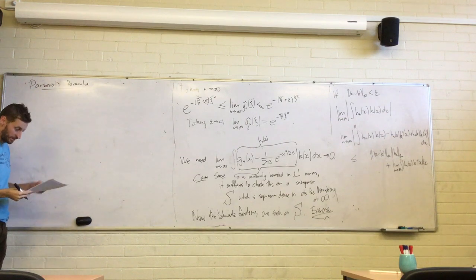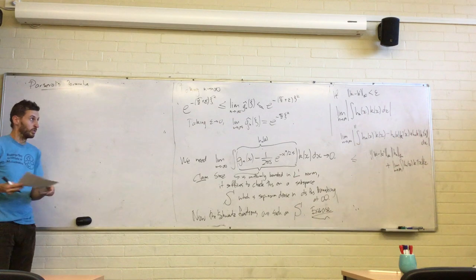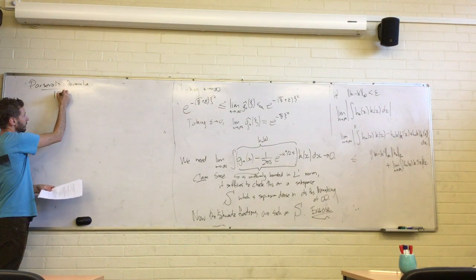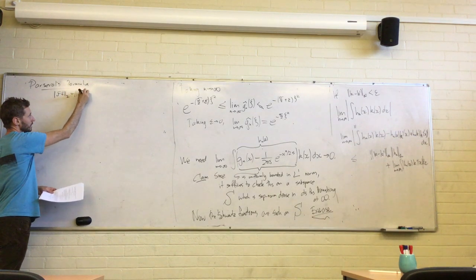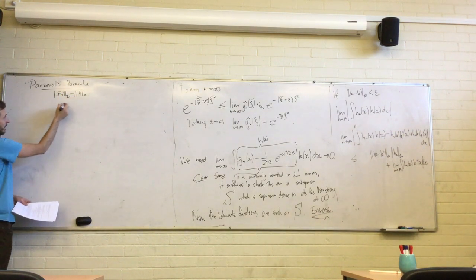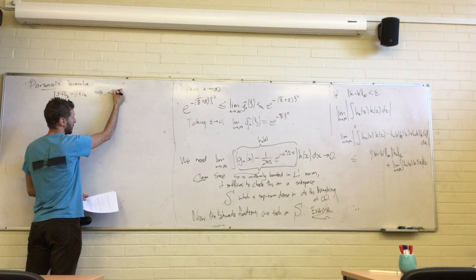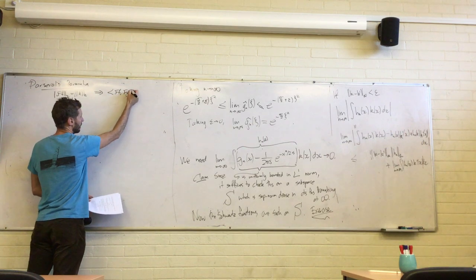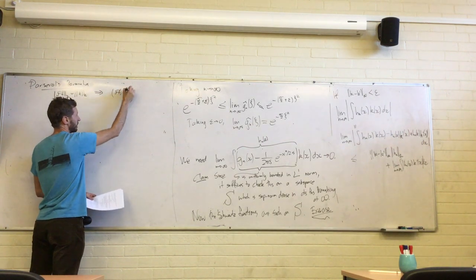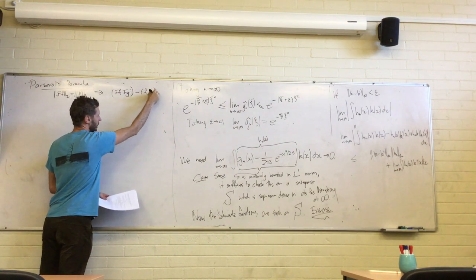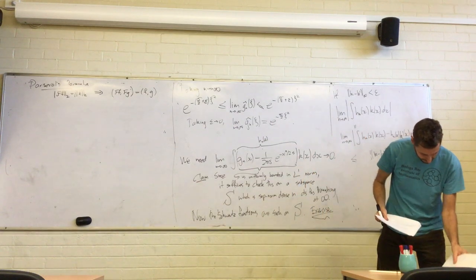We just need Parseval's formula. The Fourier transform preserves the L2 norm. A pretty easy consequence of this is that it preserves inner products — if you've got an operator that preserves all norms, it necessarily preserves inner products.